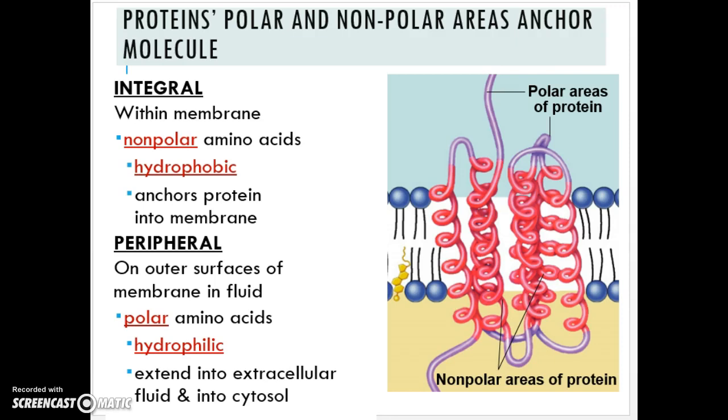The other type of protein is the peripheral which is going to be on the outer surface of the membrane. This is where we can have proteins with polar amino acids that are hydrophilic, and that can extend into the extracellular fluid or into the cytosol which are both aqueous environments that need a hydrophilic molecule to work and function correctly.